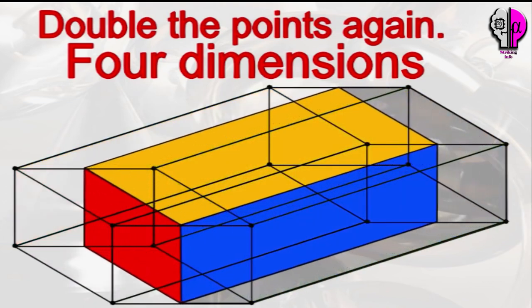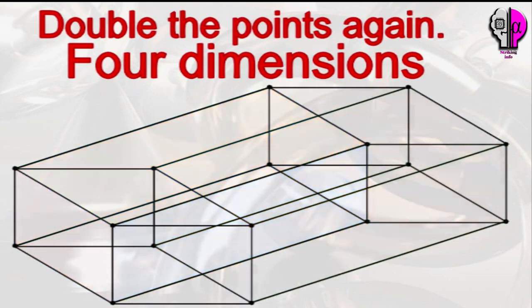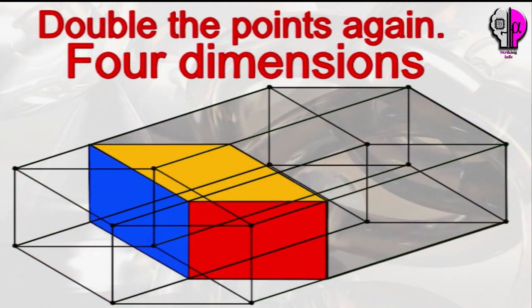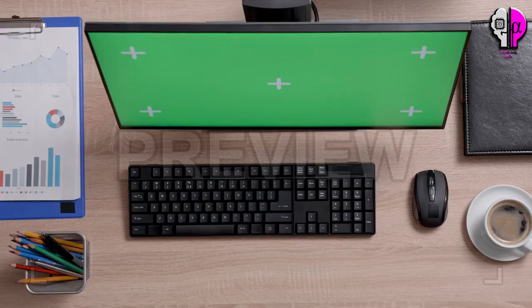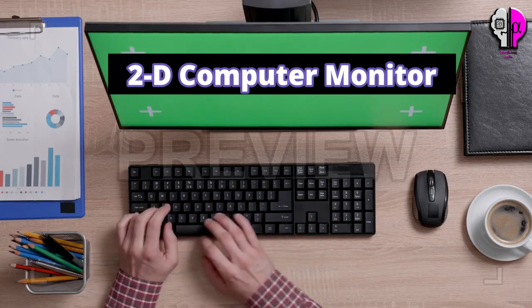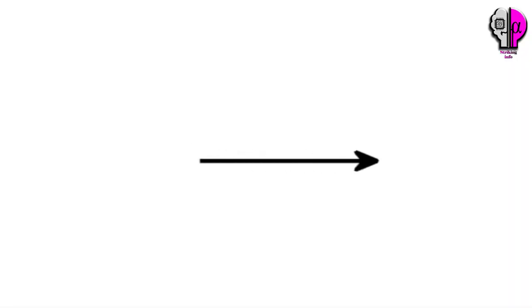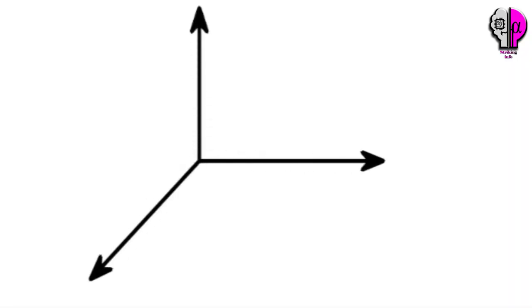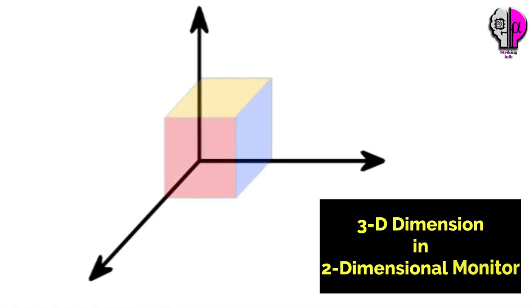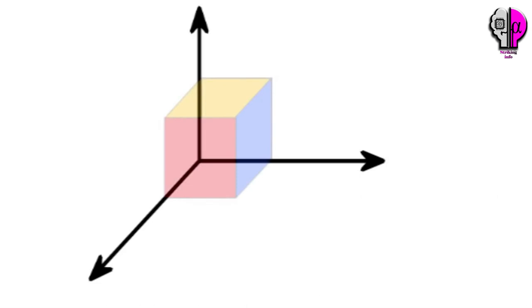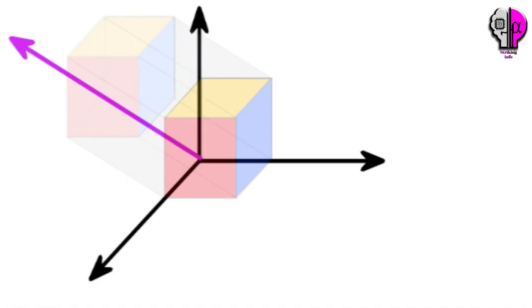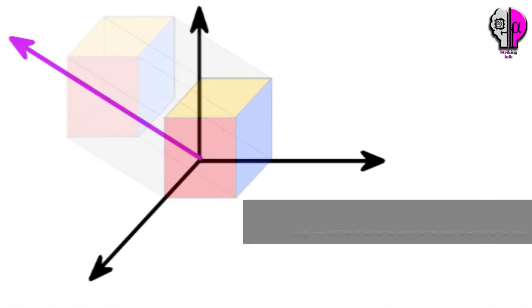Now you might be scared to move forward because it might seem complicated. You are watching this on a flat two-dimensional computer monitor. In two dimensions it is not possible to have three axes each of which is 90 degrees to the other two, yet we accept this picture as a representation of three dimensions displayed on a two-dimensional monitor. In three dimensions it is not possible to have four axes each of which is 90 degrees to the other three, yet we can accept that this is a representation of four dimensions.